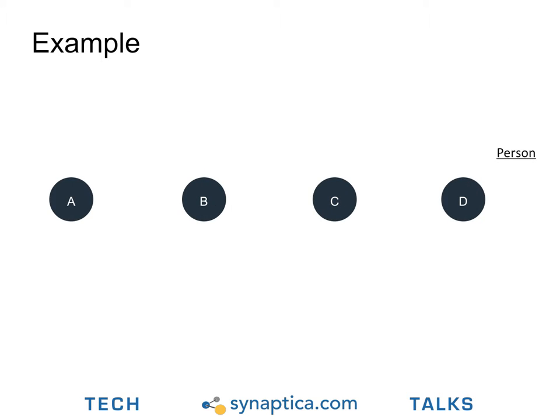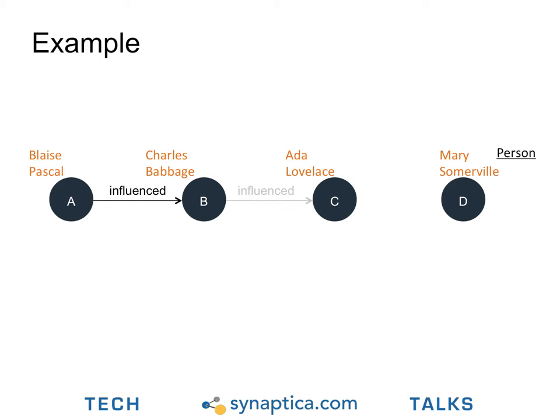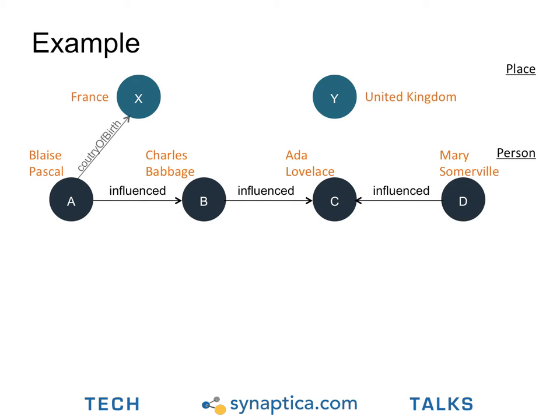Now let us consider an example dataset to model. We have a set of four people: Charles Babbage, Blaise Pascal, Ada Lovelace, and Mary Somerville. We wish to indicate that Pascal influenced Babbage, who in turn influenced Lovelace, who was also influenced by Somerville. We then have a couple of countries indicating their places of birth — Pascal from France, and the rest from the UK.